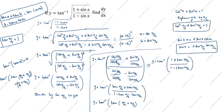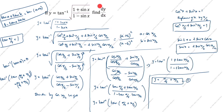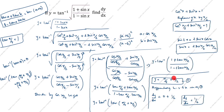This is the answer. y is equal to π/4 plus x/2. This is equation 1. What we need to find is dy/dx. Differentiating with respect to x in equation 1: dy/dx is equal to 0 plus 1/2. The differentiation of π/4 is 0 since it is a constant term. The differentiation of x is 1, so we get 1/2. Therefore, dy/dx is equal to 1/2. Thanks for watching this video.